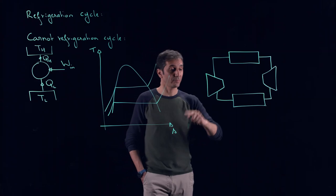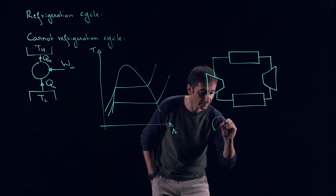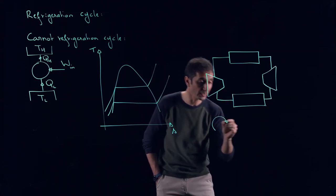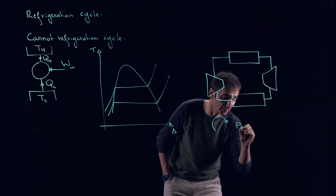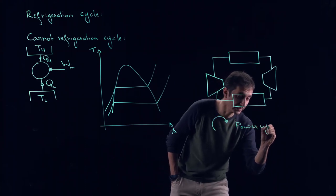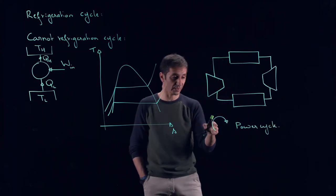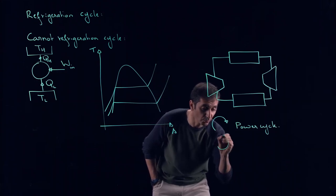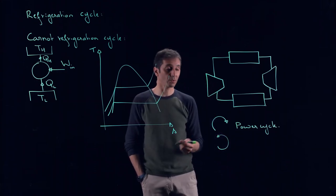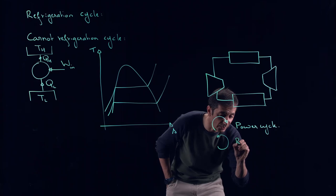Now, if you run it this way, clockwise, this is a power cycle. Obviously, this is only for a reversible cycle, and if you run it counterclockwise, you have a refrigeration cycle.